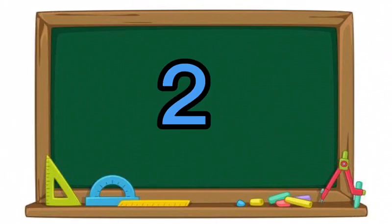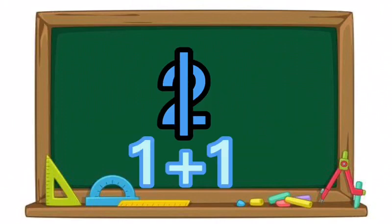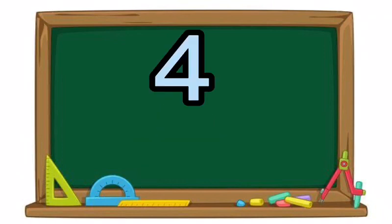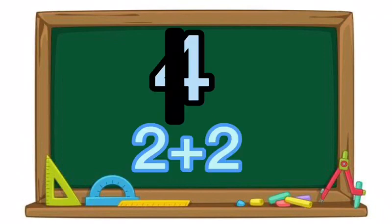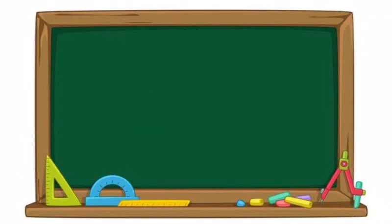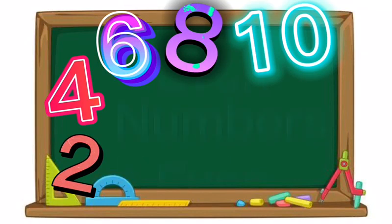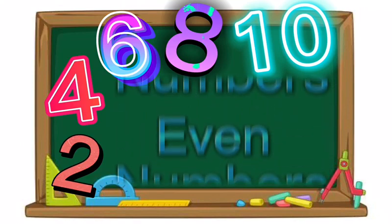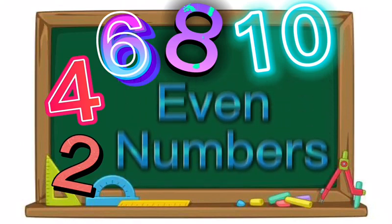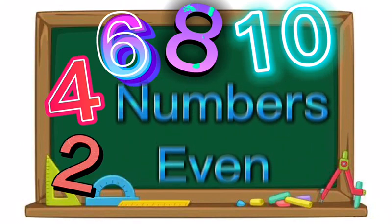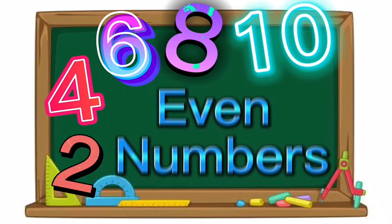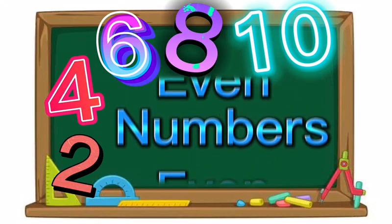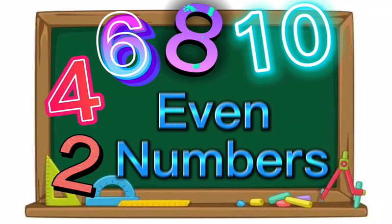Two is an even number because it splits equally in half. Four splits equally in half. A number that can be divided into two halves into two equal parts is called an even number.